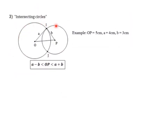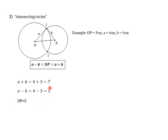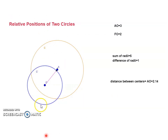The last case is intersecting circles. The rule says: if the distance between the two centers OP is between A minus B and A plus B, then the circles are intersecting. Applying this to the example: A plus B is 7, A minus B is 1, and OP is 5. Since 5 is between 1 and 7, these two circles are intersecting.